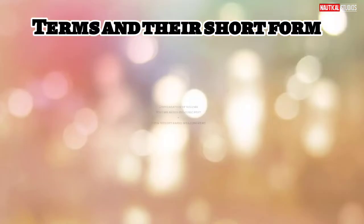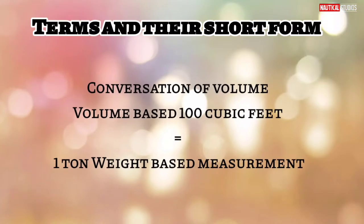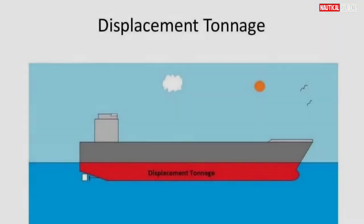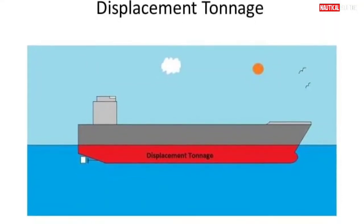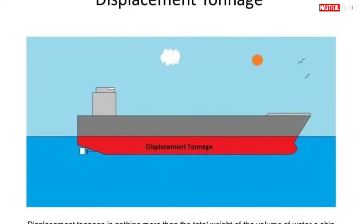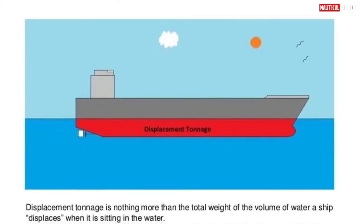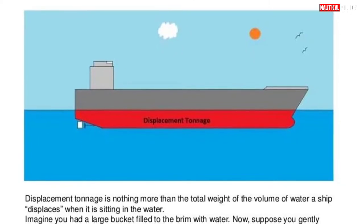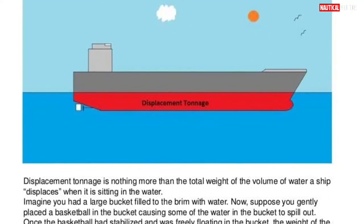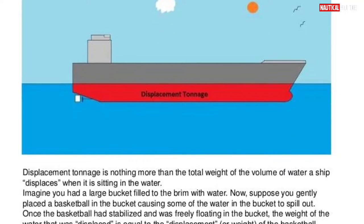For volume-based measurement, the conversion is: 100 cubic feet equals one ton. Displacement tonnage is nothing more than the total weight of the volume of water a ship displaces when it is sitting in the water.